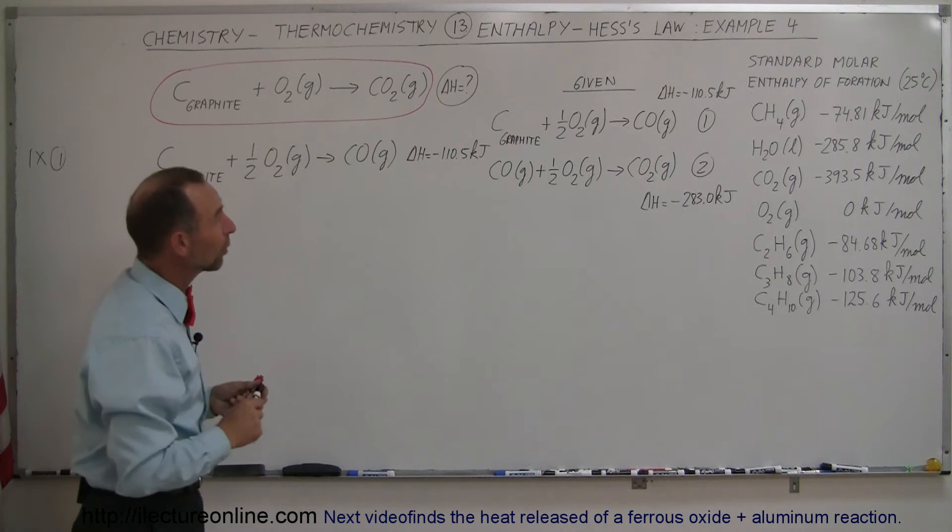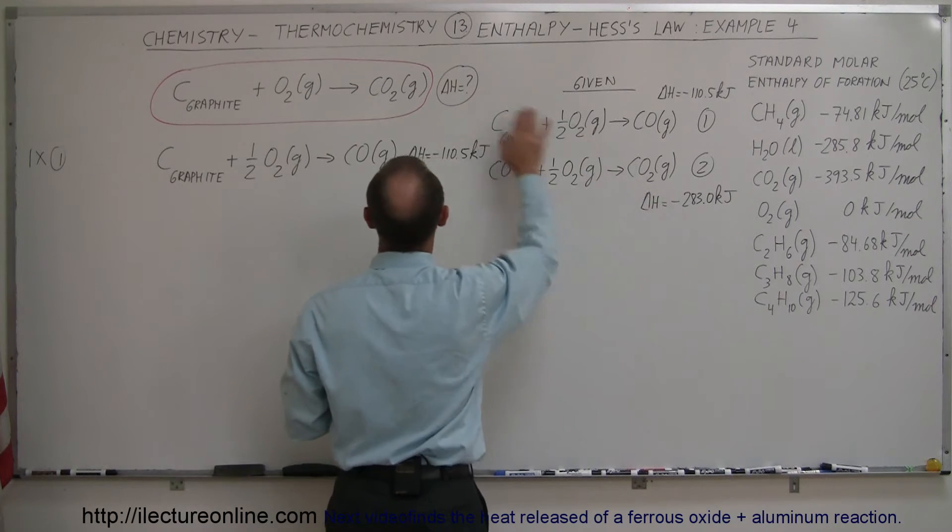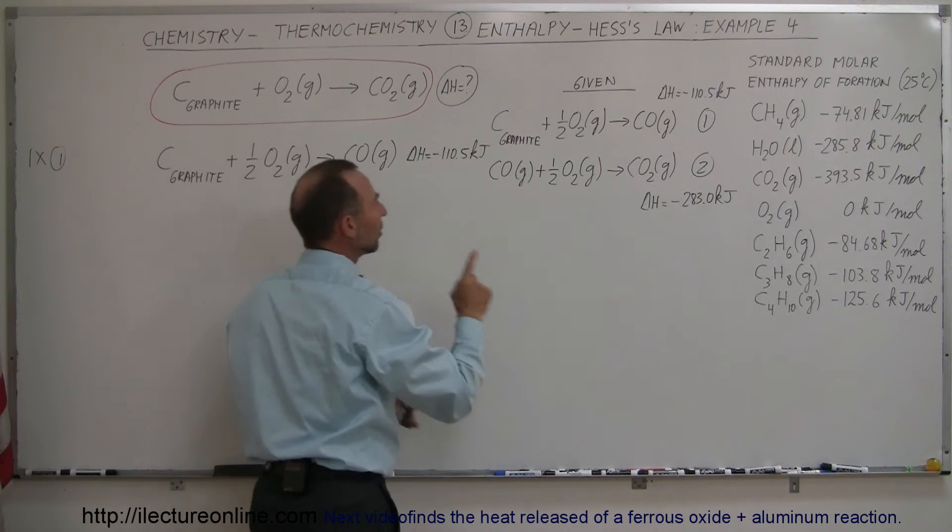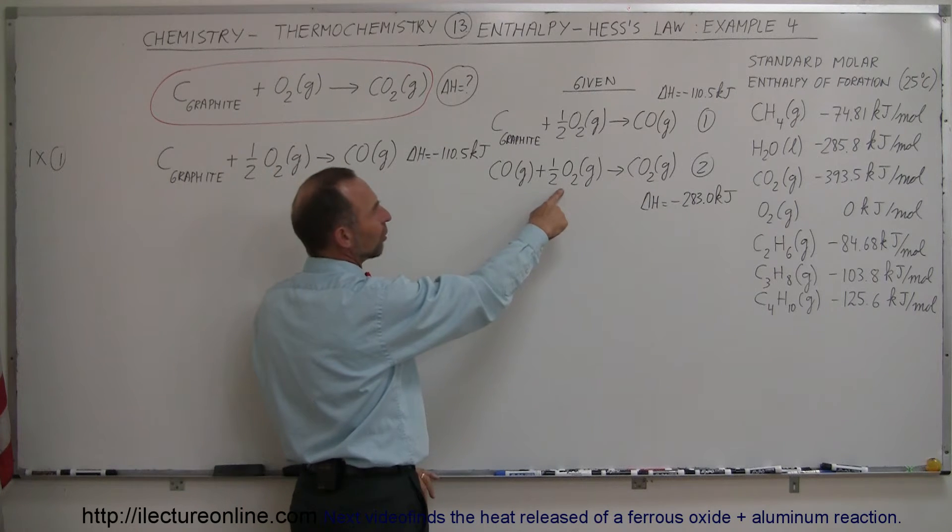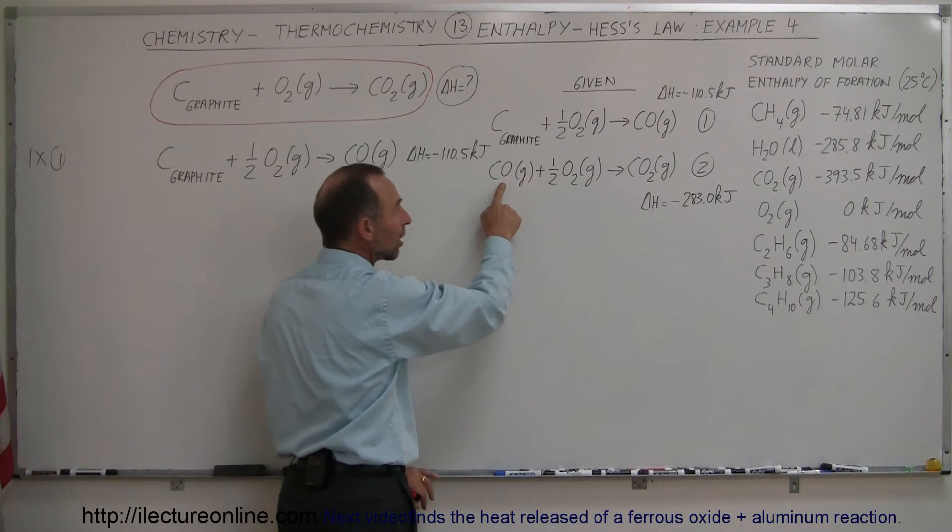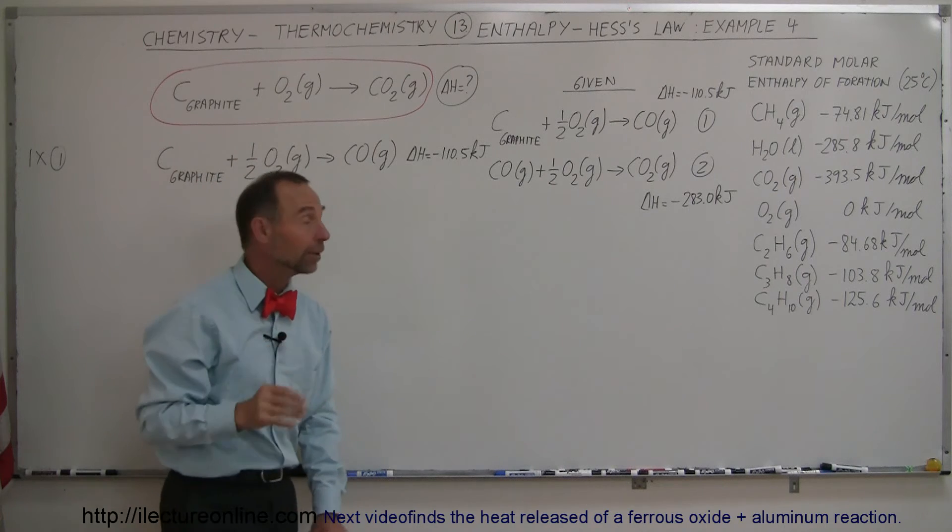I look at my second equation and I notice that I have carbon dioxide gas on the right side, which is what I want. So I think I want to take this and plop it down there. In addition, on the left side I have half a mole of oxygen, which would increase this to a full mole, and have carbon monoxide gas on the left side, which will cancel out the carbon monoxide on the right side for that one.